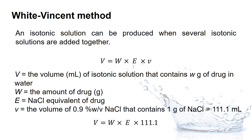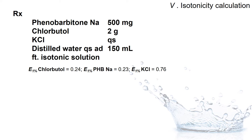The White-Winson method is represented by the following equation: V refers to the volume of the isotonic solution containing an amount of W grams of drug or substance, multiplied by E1% of the substance, and then multiplied by the volume of 0.9% sodium chloride containing 1 gram of sodium chloride, which is equivalent to the value of 111.1 mL.